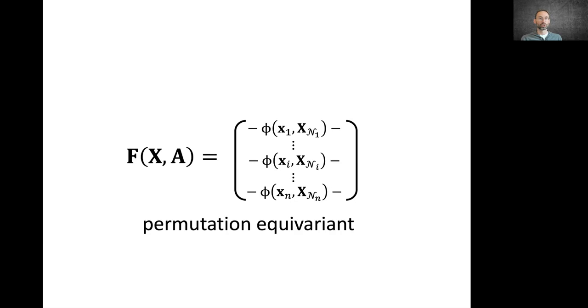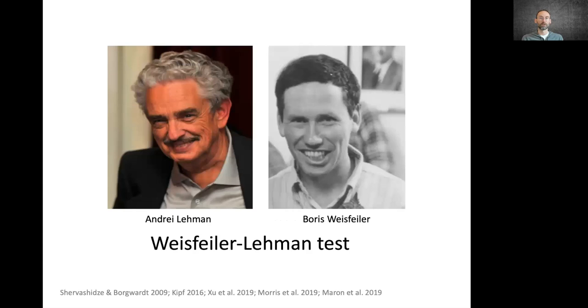and we aggregate the feature vectors together with the feature vector of the node itself. Because we don't have a canonical order of the neighbors, this must be done in permutation invariant way. We have a symmetric or permutation invariant function φ, and if we apply it to every node, we get a function that is permutation equivariant. The choice of this function φ is extremely important, and it determines the expressive power of the resulting architecture. In particular, we can relate it to what is called the Weisfeiler-Leman graph isomorphism test.